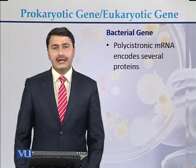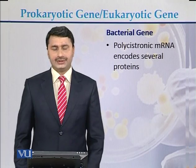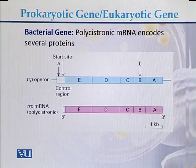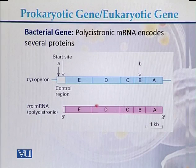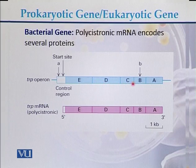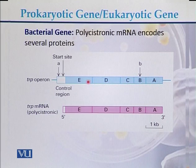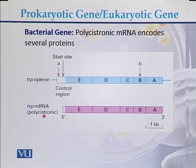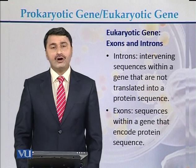Polycistron messenger RNA encodes several proteins. This diagram shows a bacterial gene with polycistron messenger RNA encoding several proteins. We can see gene E, gene D, gene C, gene B, and gene A — all 5 genes placed side by side and transcribed simultaneously in the form of polycistron messenger RNA.